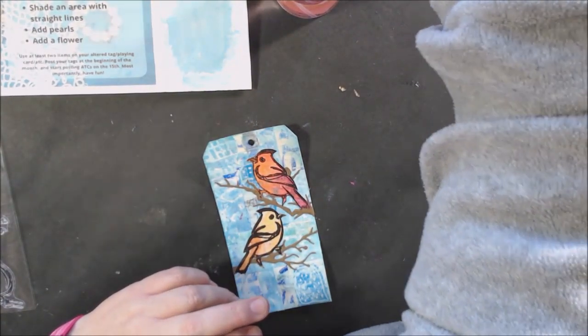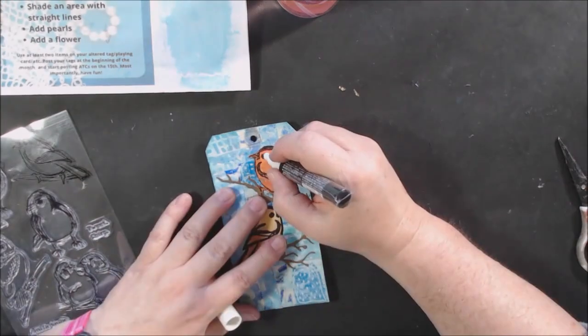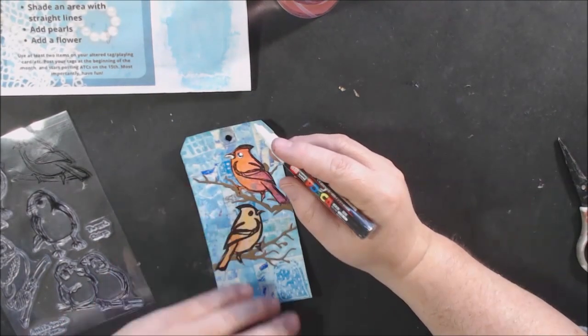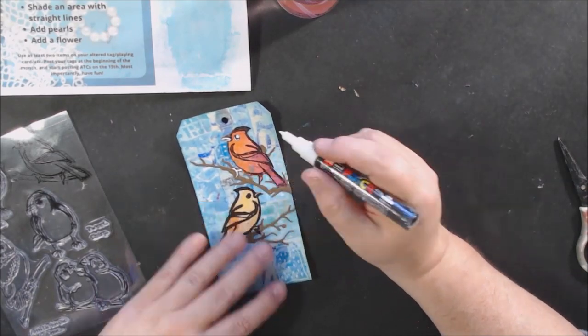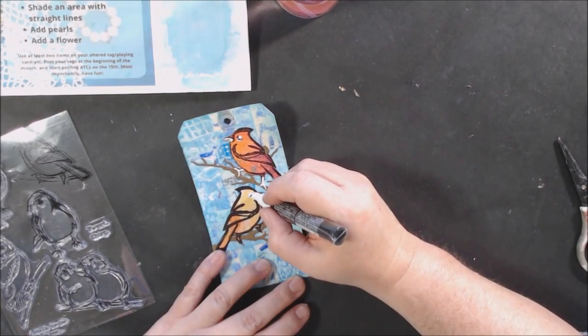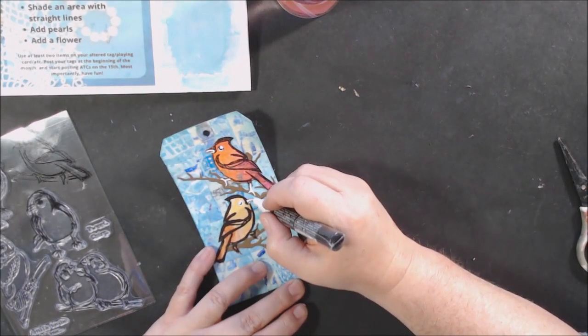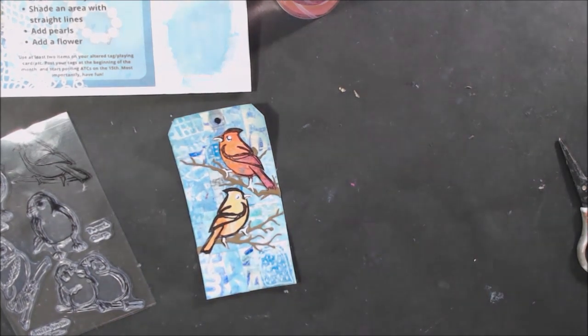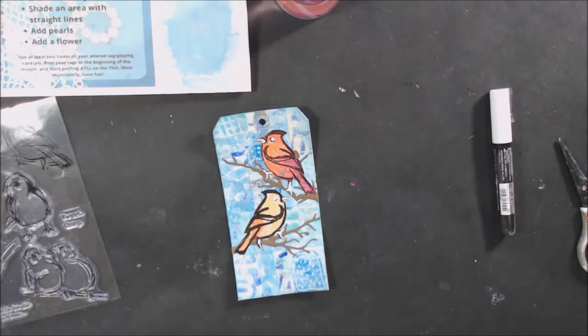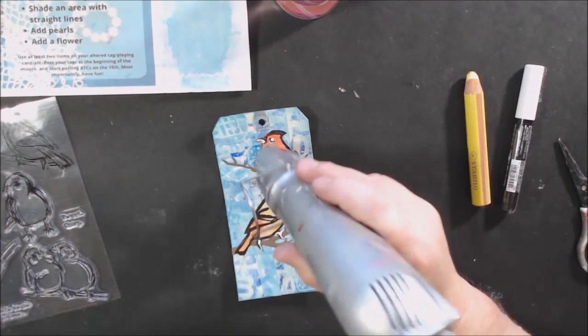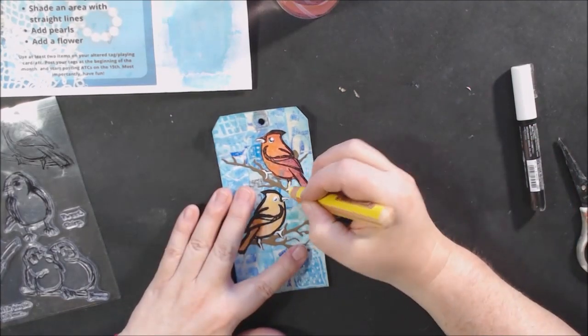So I had some little die-cut branches from another viewer who sent them to me in happy mail and I put some of those on. Then I glued down my little birds and I think they're cute, they're kind of facing each other on different branches. But if the birds had been going in the same direction it just would have looked stupid. I really needed to have one in the opposite direction.